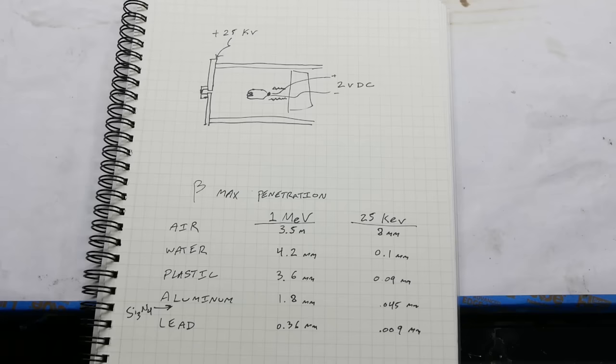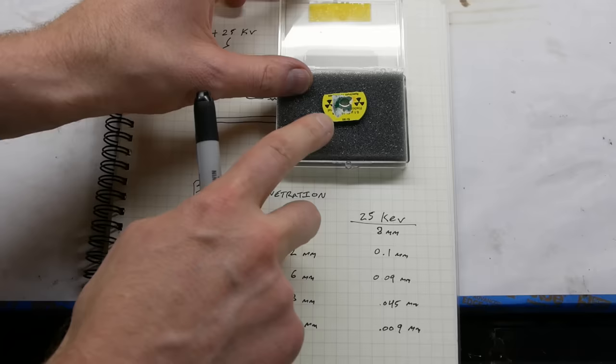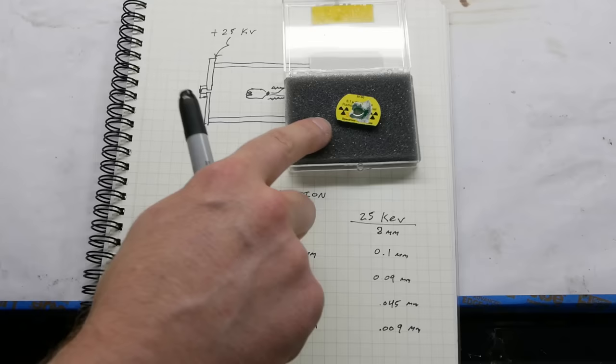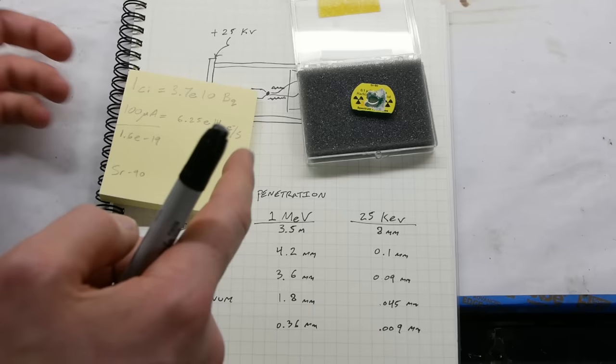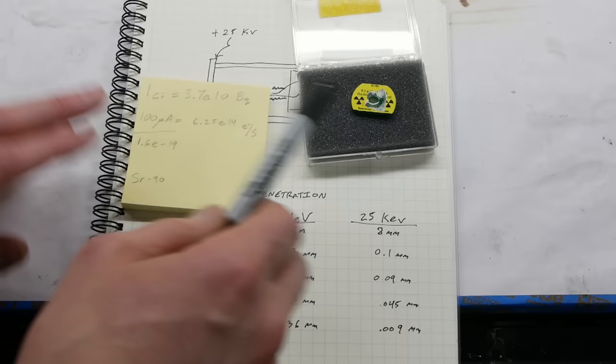Now, having said that, the intensity of the electron beam coming out here might blow your mind compared to other beta sources. Here's the little beta source that I have. This is strontium-90. It says on here, it's hard to see, but it's actually 0.1 microcuries of activity. By definition, one curie is 3.7 times 10 to the 10 becquerels, which is decays per second. I think for a lot of materials, this is essentially how many particles are coming out, or the maximum number that could possibly be coming out.